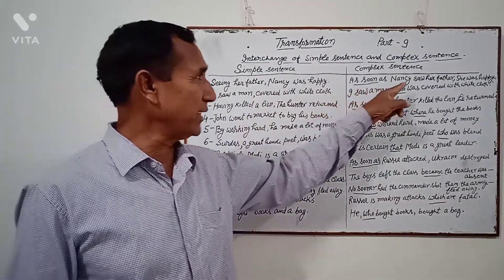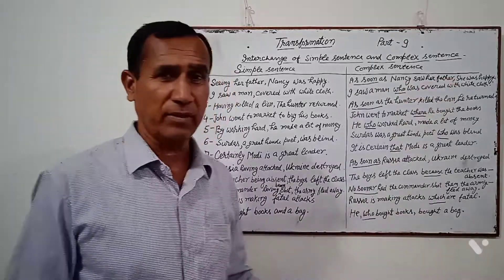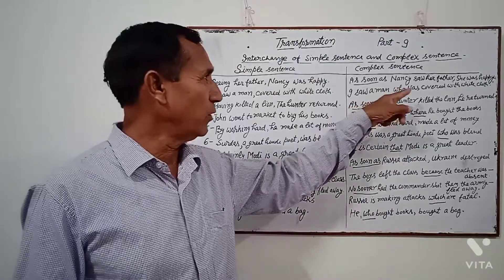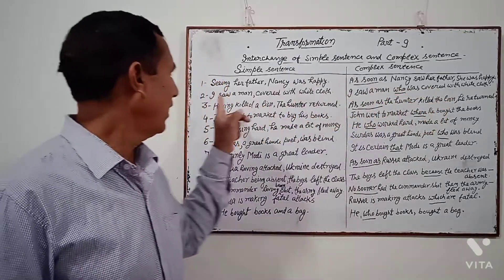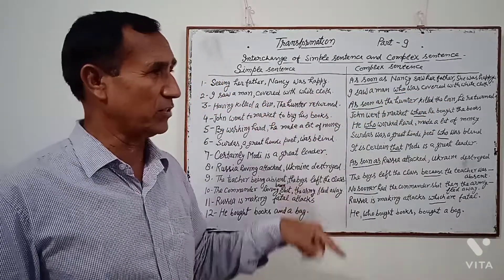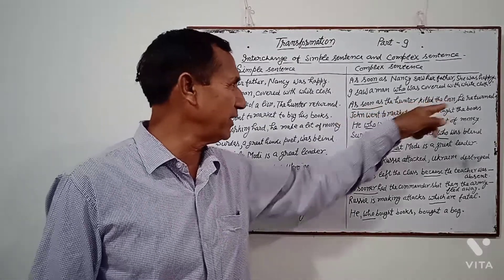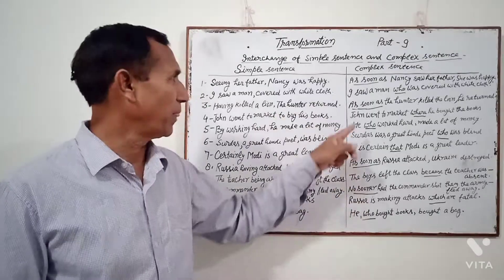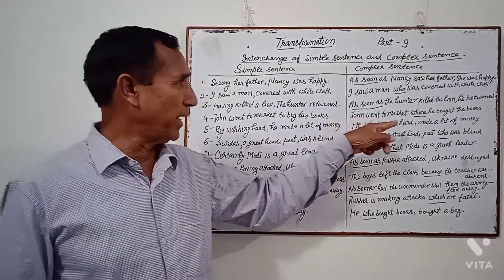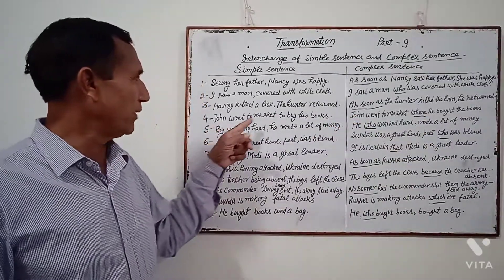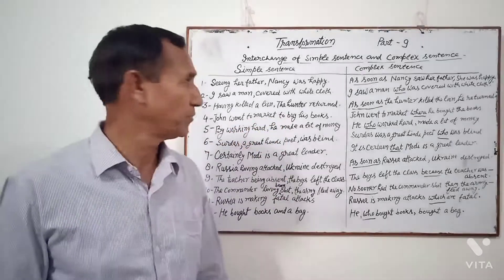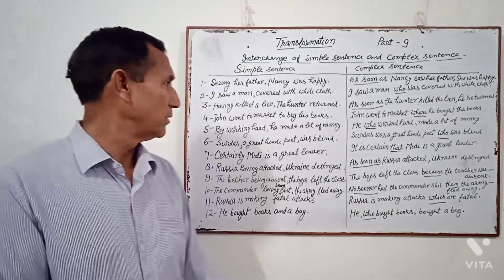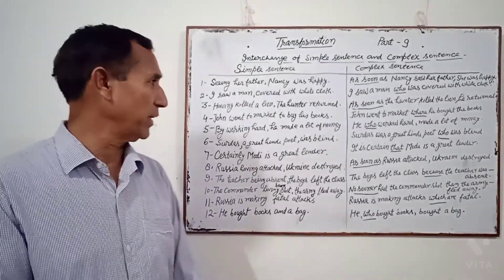Suppose: Complex sentence "As soon as Nancy saw her father, she was happy." Simple: "Nancy was happy seeing her father." Complex: "I saw a man who was covered with white cloth." Simple: "I saw a man covered with a white cloth." Complex: "As soon as the hunter killed the lion, he returned." Simple: "Having killed a lion, the hunter returned." Complex: "John went to market where he bought the books." Simple: "John went to market to buy his books." Complex: "He who worked hard made a lot of money." Simple: "By working hard, he made a lot of money."